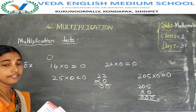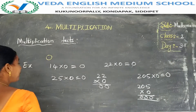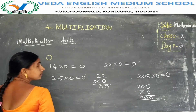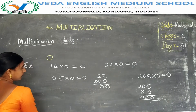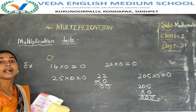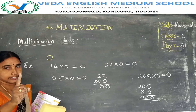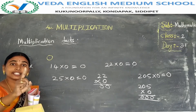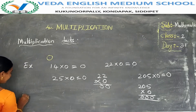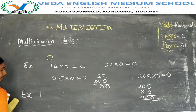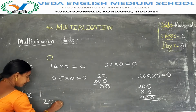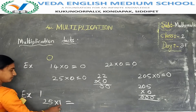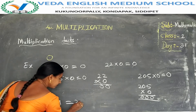Next one: when a number is multiplied by 1, the answer is the number itself. When a number is multiplied by 1, the answer is the number itself. For example, 25 ones are 25.